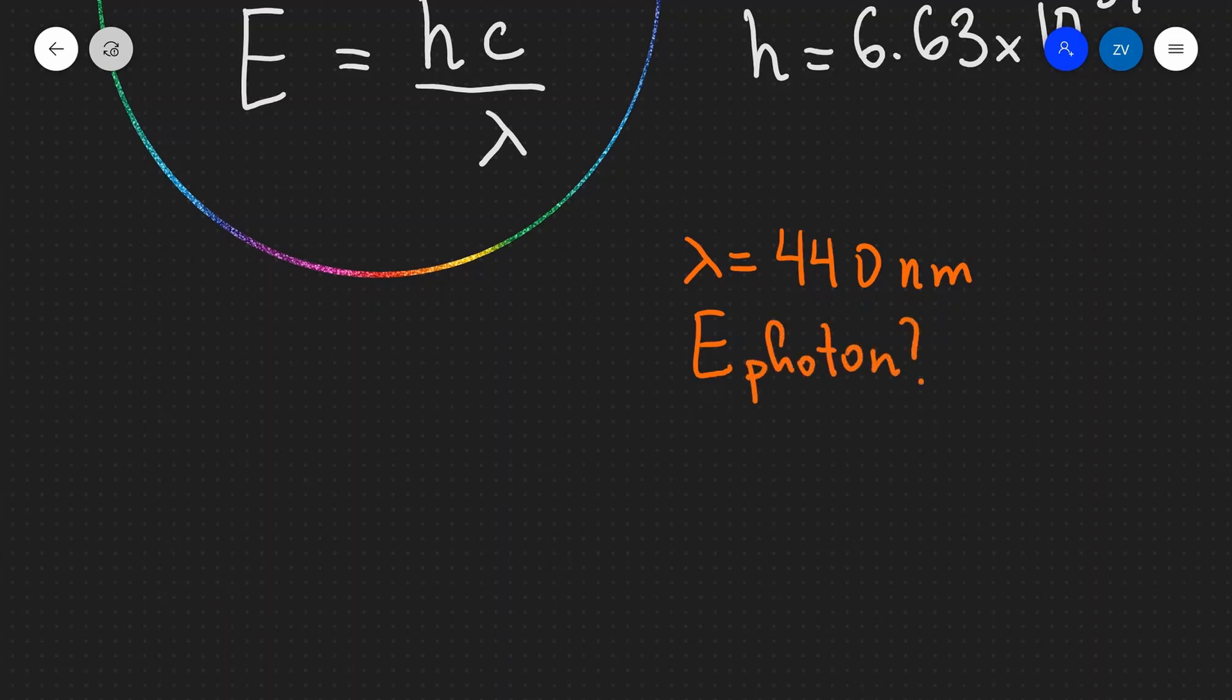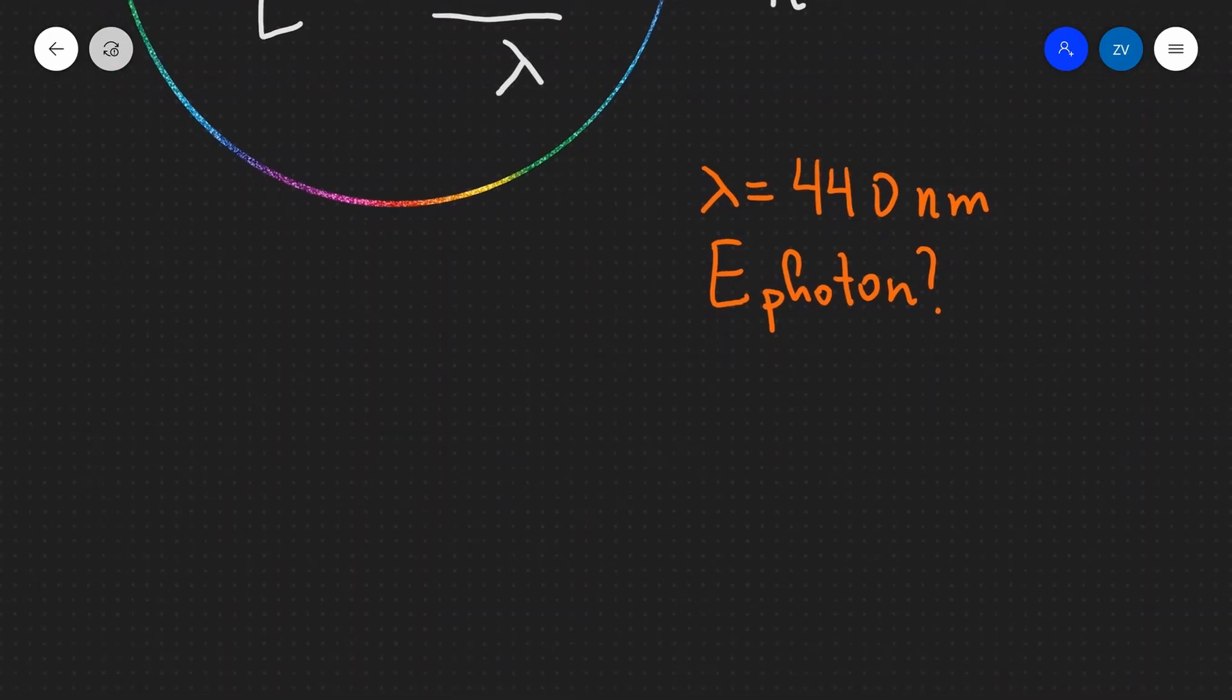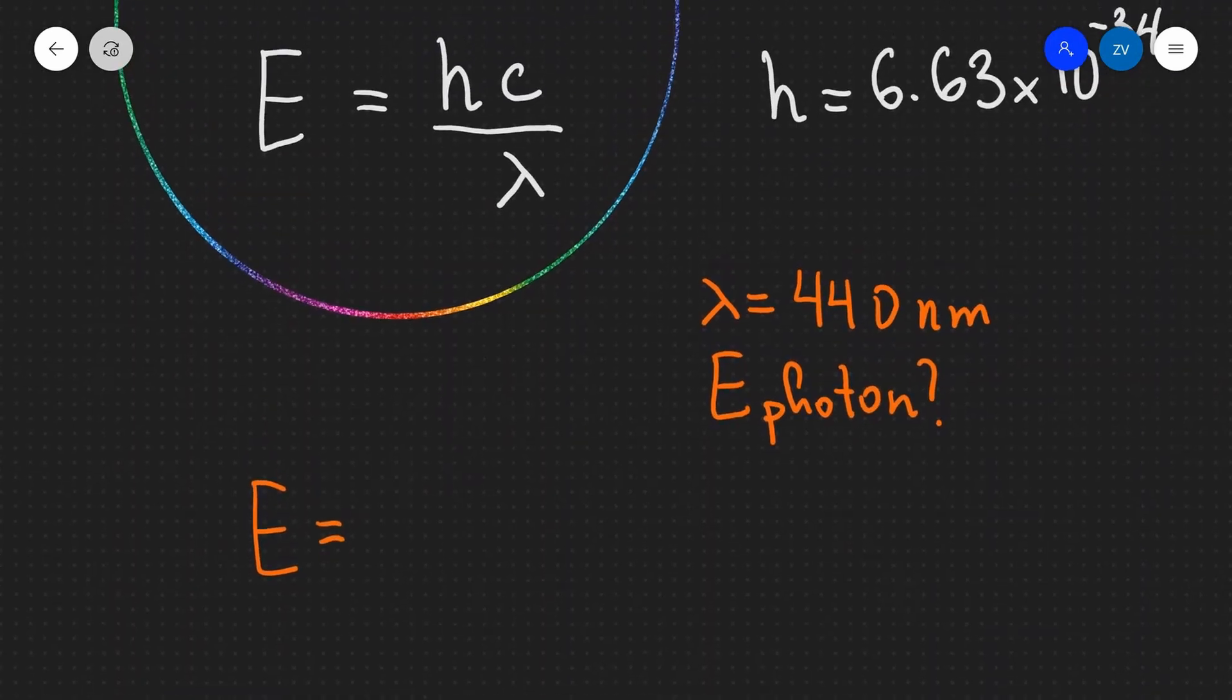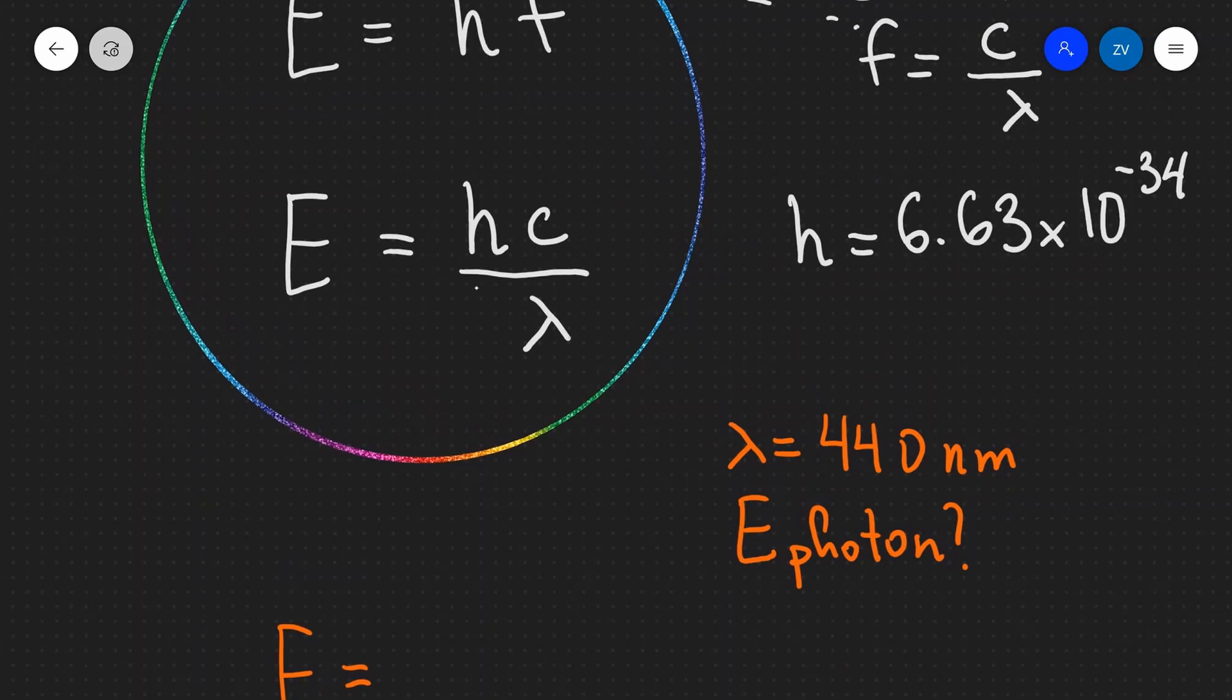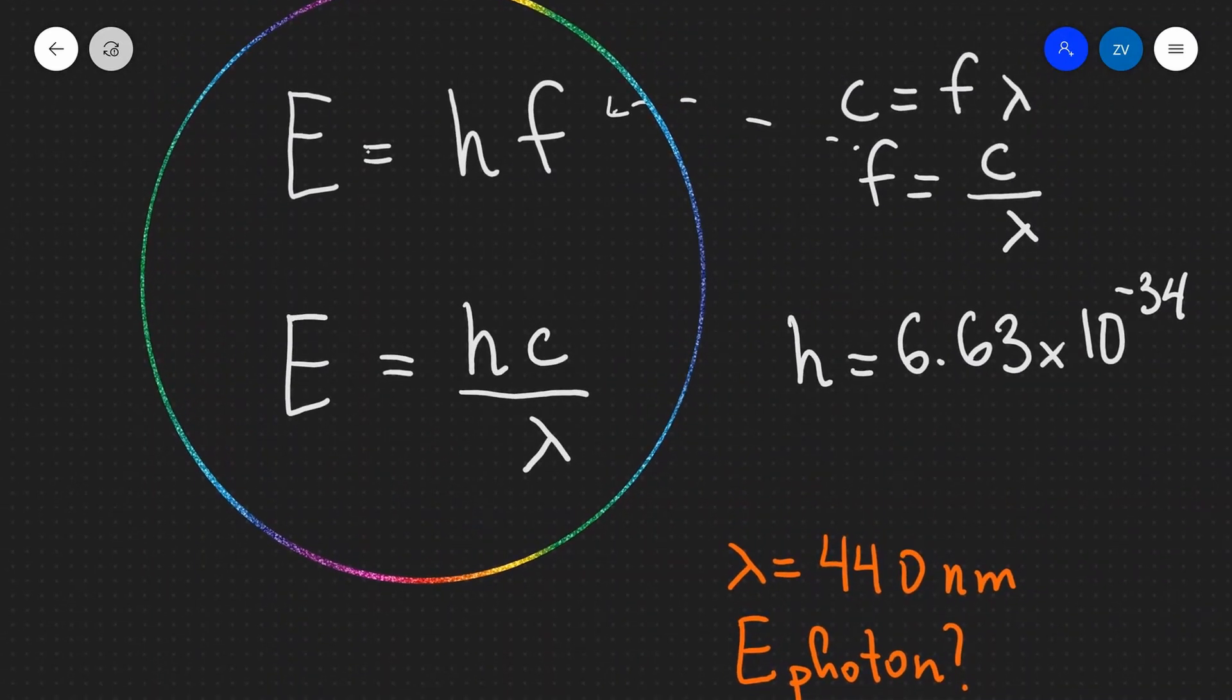Well, in order to find the energy of one of those particles of light, all we need to do is just use one of those equations above. If we're given the wavelength, we're going to use the second one. If we're given the frequency, we're going to use the first one. In this case, we're given the wavelength.